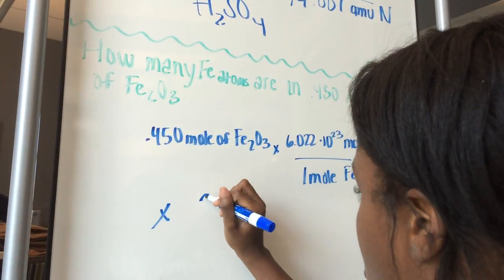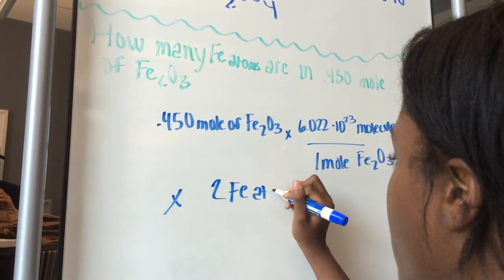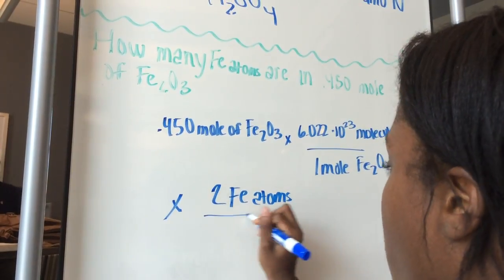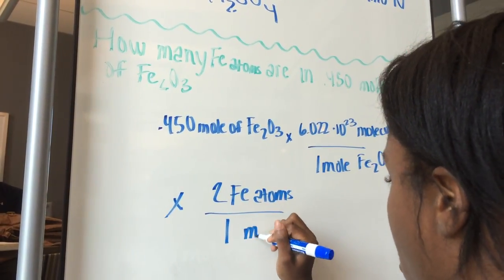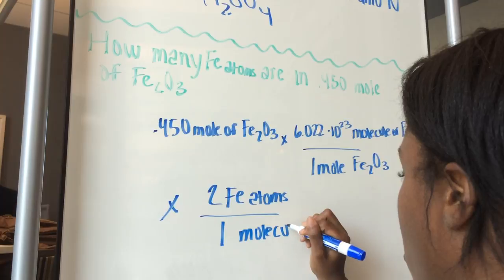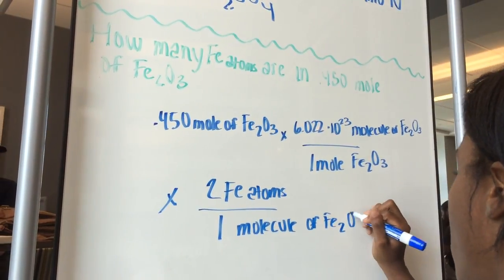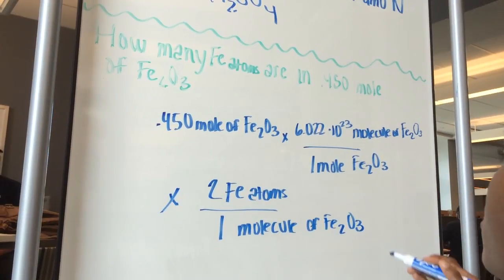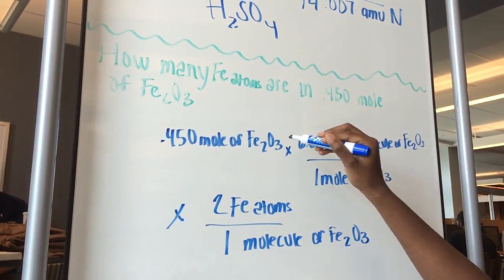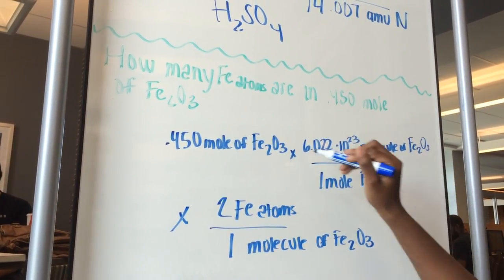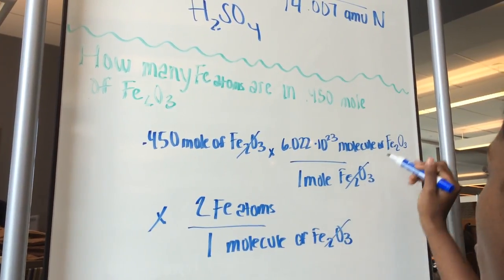So it's going to be 2 Fe atoms divided by 1 molecule of Fe2O3. So you want to make sure every time that you're doing it, that whatever's on the top is also on the bottom, so that way you can continue to cross them out as you go.